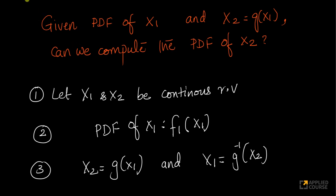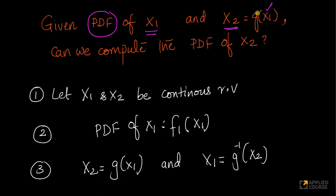Here is a very interesting question. Given the probability density function of a random variable x1, and given that there is another random variable x2, which I can represent as a function of x1, x1 and x2 are related using this function g.